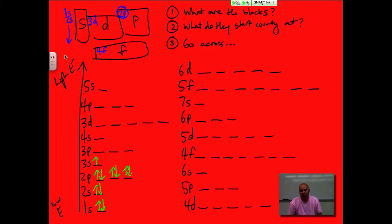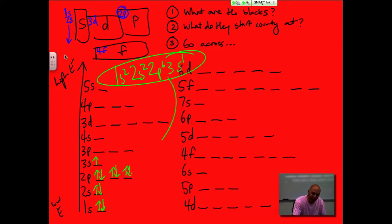Electron configurations. You're reading across and it's 1S2, 2S2, 2P6, 3S1. That right there is what I have for that one.